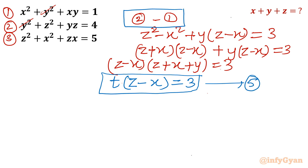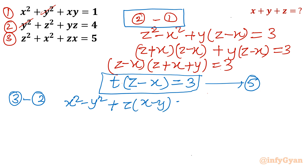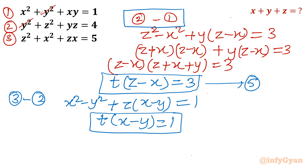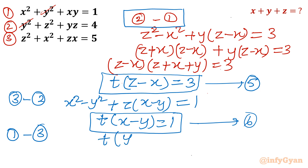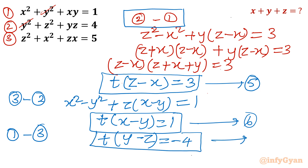Now I will execute another operation: 3 minus 2. The z squared term cancels. We get x squared minus y squared plus z(x minus y) equals 1, giving t(x minus y) equals 1. I call this equation number 6. Similarly, performing operation 1 minus 3 gives t(y minus z) equals minus 4. I call this equation number 7.